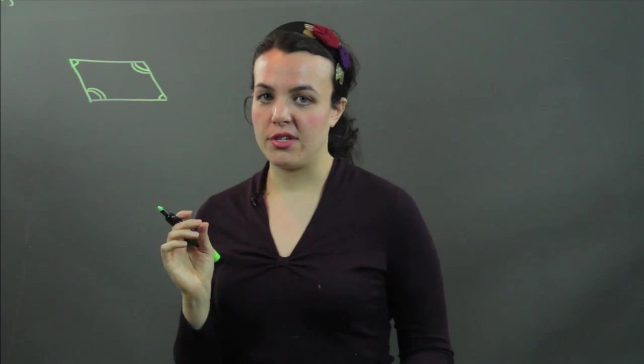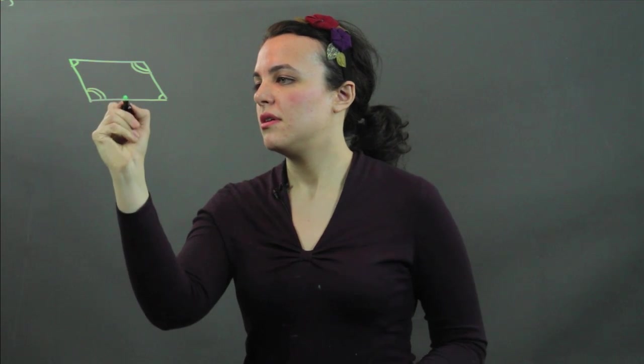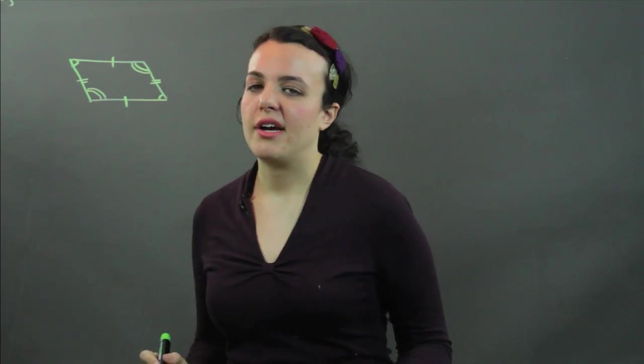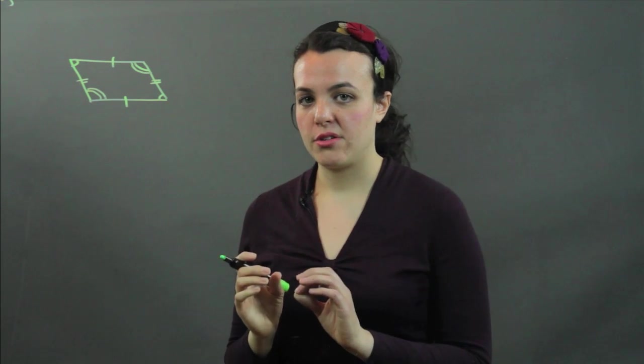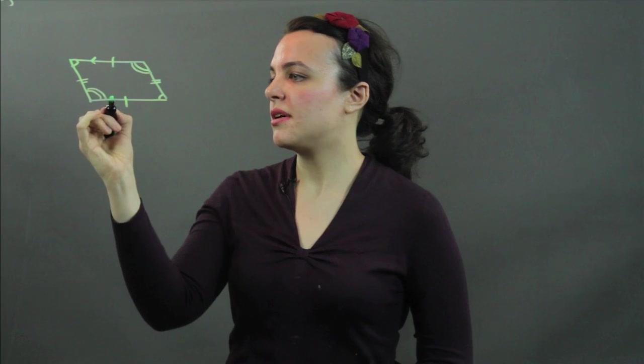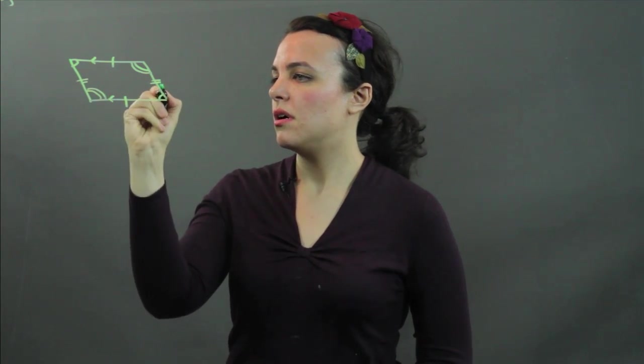We also have two pairs of congruent sides. The opposite sides are congruent. And then we have two pairs of parallel sides. Again, the opposite sides are parallel.